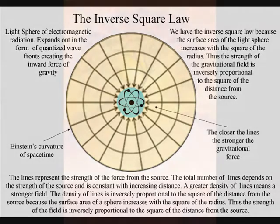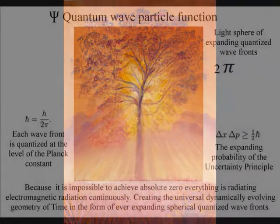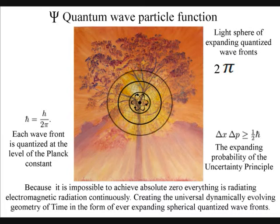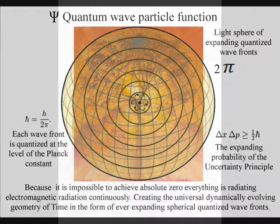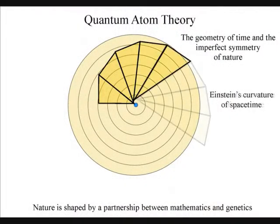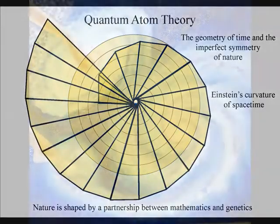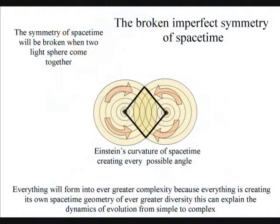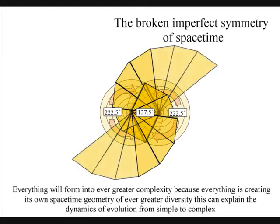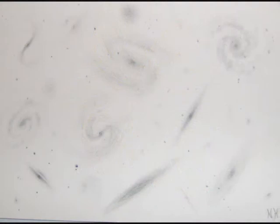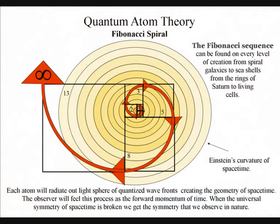Because it is impossible to achieve absolute zero, everything is radiating electromagnetic radiation continuously, creating the universal dynamically evolving geometry of time in the form of ever-expanding spherical quantized wave fronts. The observer will feel this as the forward momentum of time, and will see patterns of a beautiful symmetry on every level of creation, from sea shells to spiral galaxies. The atoms will distort the geometry of space-time, creating mathematical patterns of every conceivable shape. The same basic method of pattern formation, the same mechanism of symmetry breaking, governs the whole universe of organic and non-organic matter. Only a slight distortion in the space-time symmetry will spiral out, creating the visual patterns of our universe.